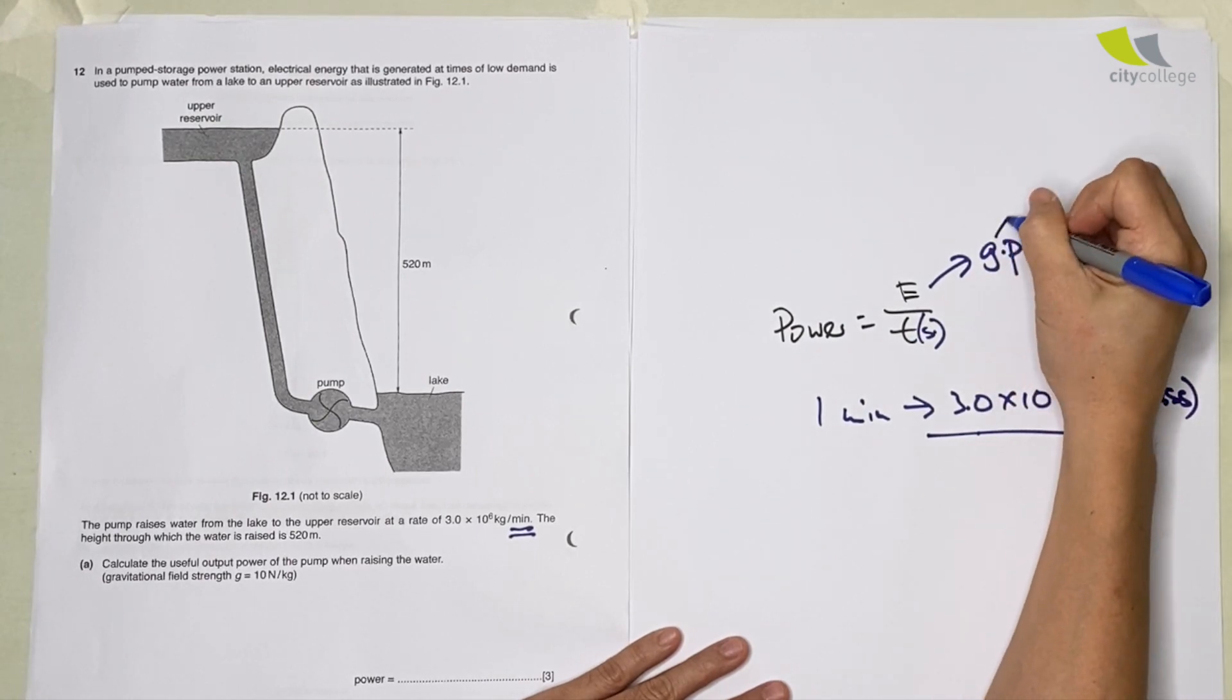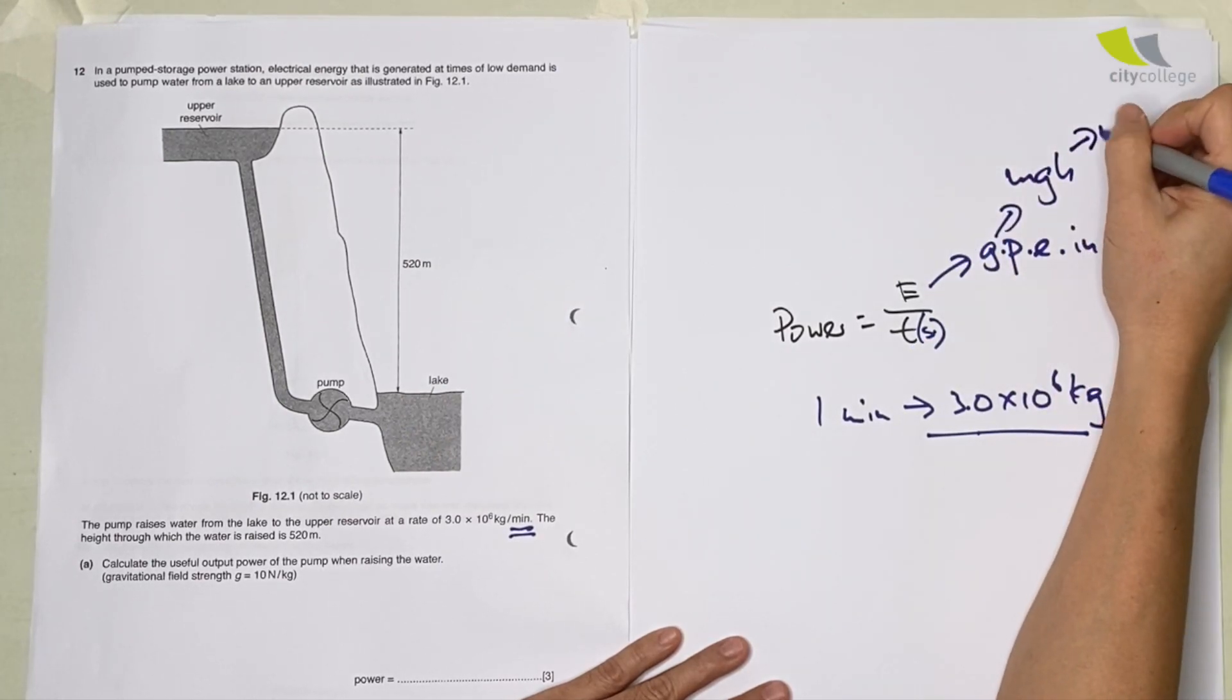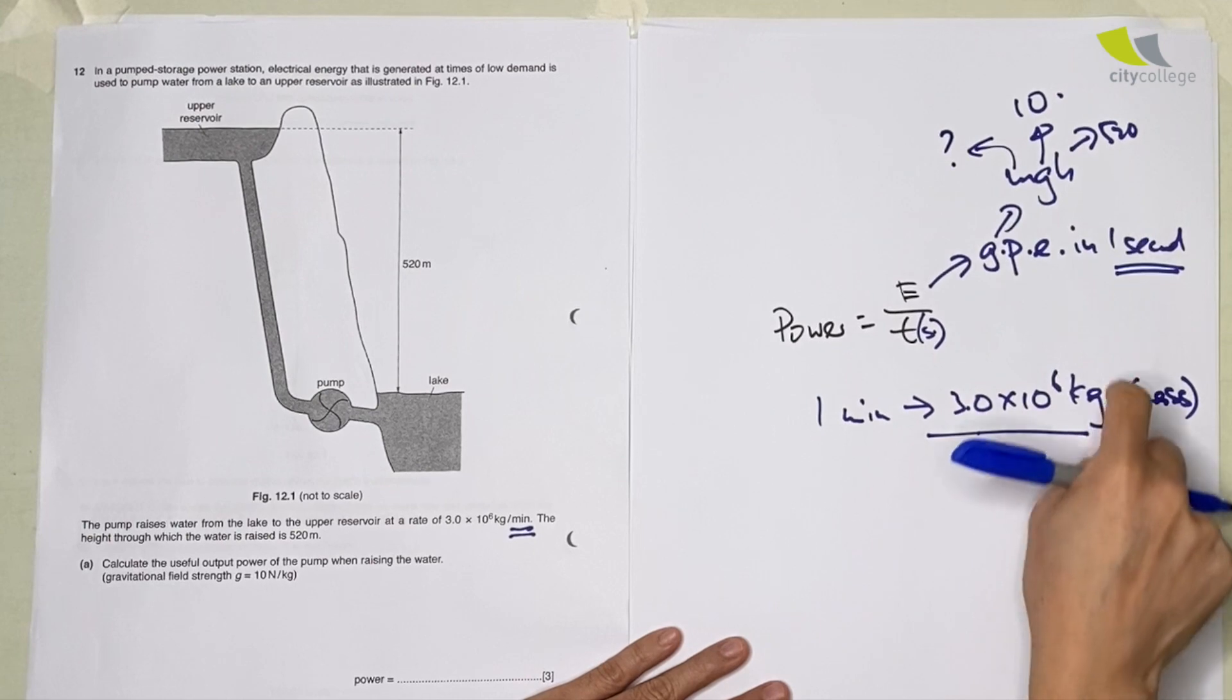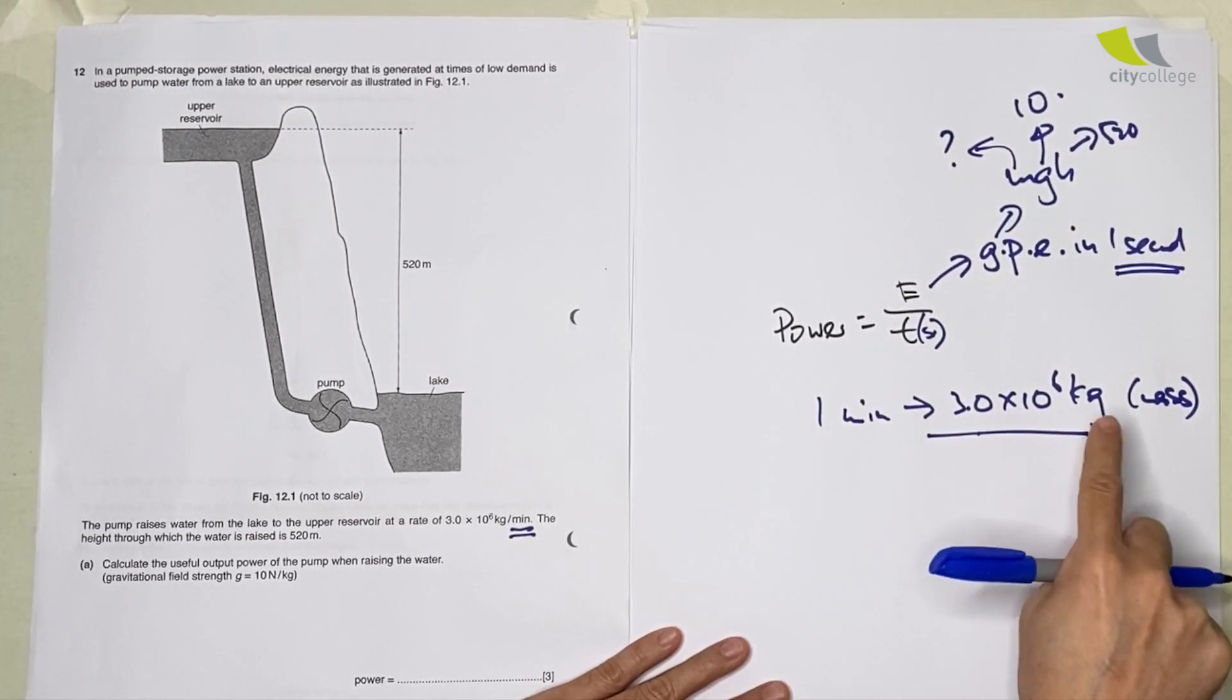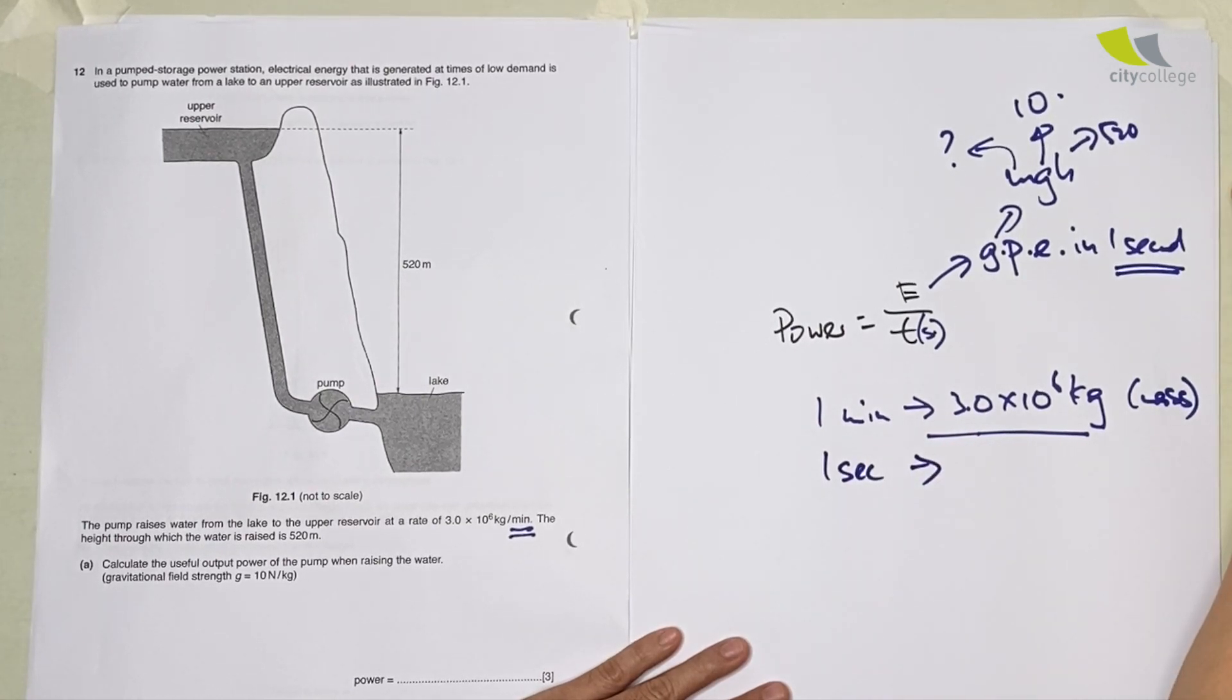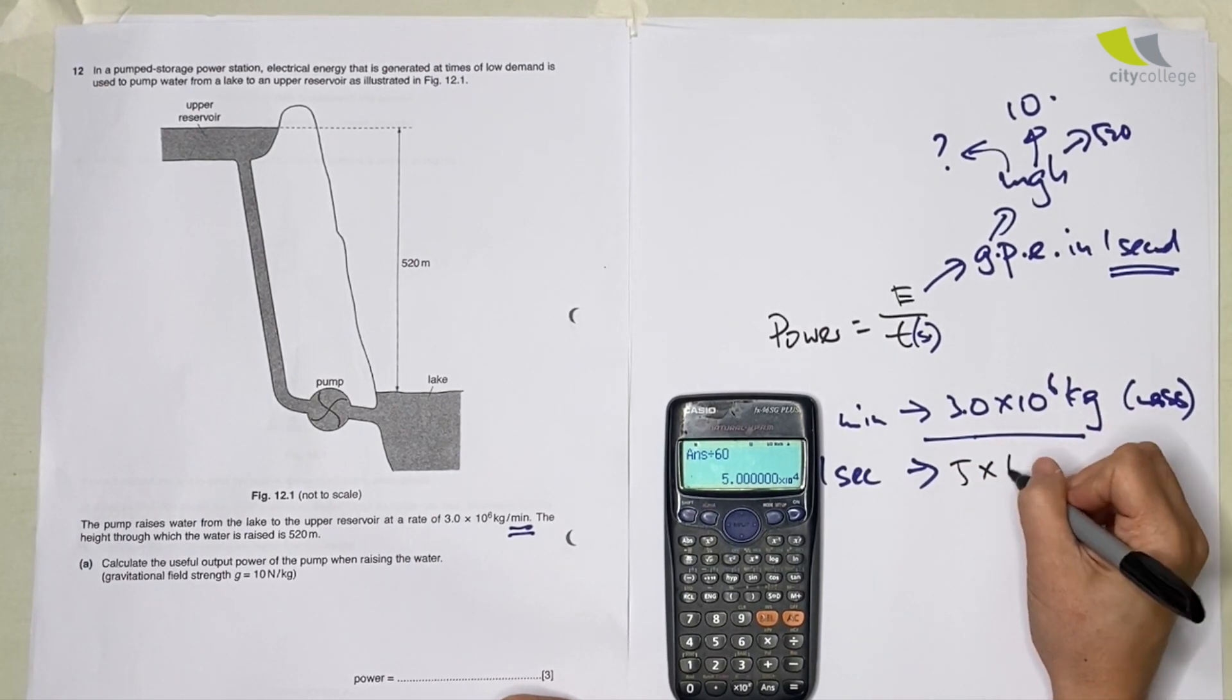h is constant at 520, g is 10. They've given you, so what you want to find is this. But one minute is 3.0 times 10 to the power 6; I want to find what is one second. So GPE in one second equals divide by 60, so I will get 5 times 10 to the power 4.